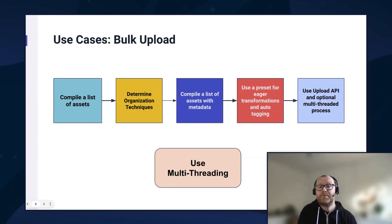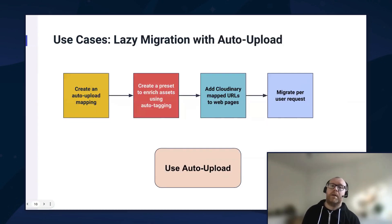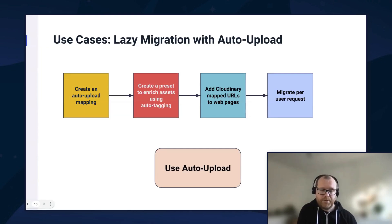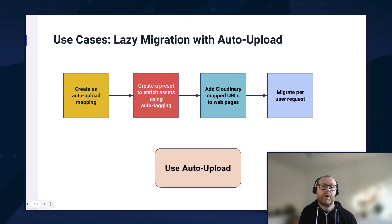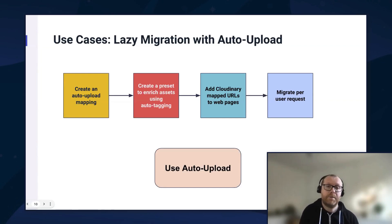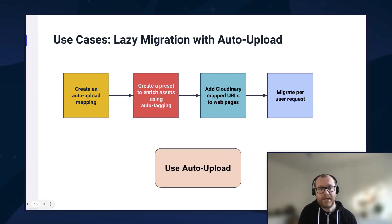Also, do you want to make use of some of the add-ons mentioned, such as AI auto-tagging or eager transformations set up ahead of time? There's another use case we'll touch on: a lazy migration. In the previous steps, we have a discrete set of assets — a curated list from a directory structure dump or an export from an existing system. But there are use cases where you want to only migrate a portion of your asset library into Cloudinary, in which case we have a feature called auto-upload. Alex will go into this in greater detail later.